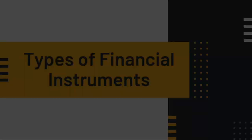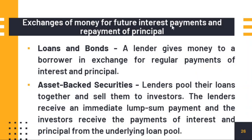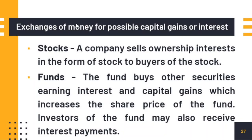Financial instruments can be categorized by purpose. The first category is based on exchanges of money for future interest payments and repayment of principal — this includes loans, bonds, and asset-backed securities. The second category is based on exchanges of money for possible capital gain or fees. An example is stocks — a company sells ownership interest in the form of stocks to buyers. When you buy stocks of a company, you receive documentation showing how many shares you own. You expect the stock value to increase, generating capital gains.